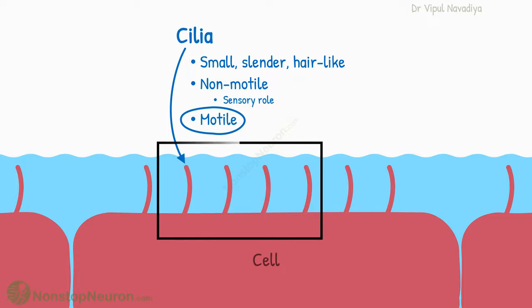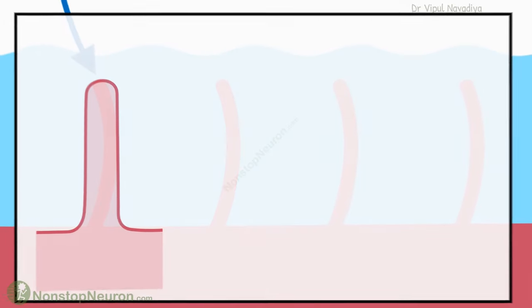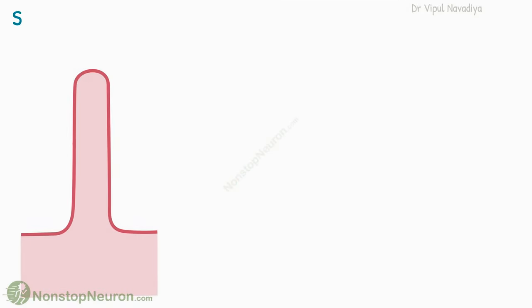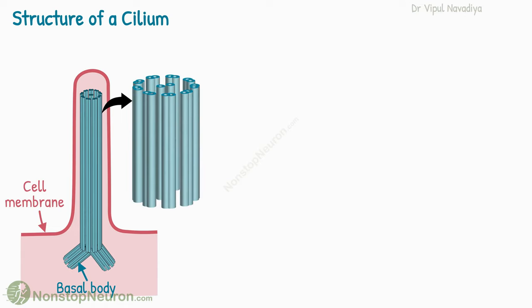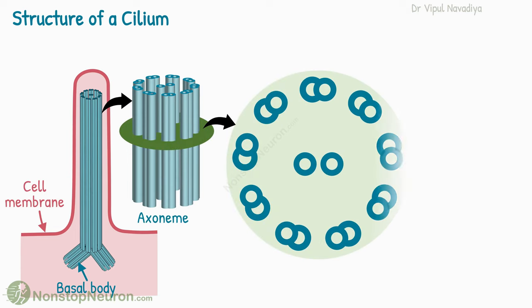Let's talk about the structure of a cilium. It arises from its own basal body, which is basically a centriole that lies immediately beneath the cell membrane. At the center of a cilium lies a structure called an axoneme. In a cross-section, it looks like this.